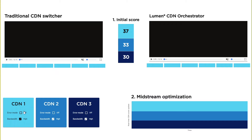On the bottom left, we have a panel where I can simulate CDN errors. I can force one of the CDNs to start returning errors on every segment to simulate a point of presence that has gone down. Or I can force a CDN bandwidth to drop to simulate congestion or other performance issues.